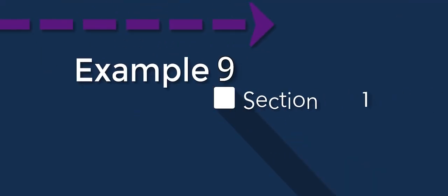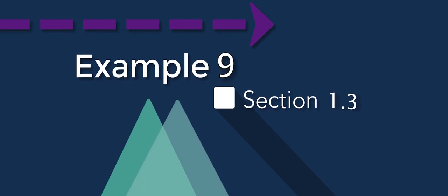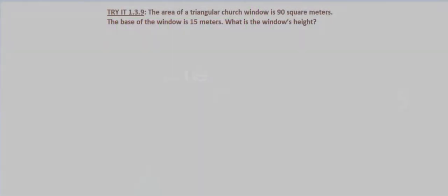So in this problem we are told that the area of a triangular church window is 90 square meters and that the base of the window is 15 meters and we're asked to find the window's height.